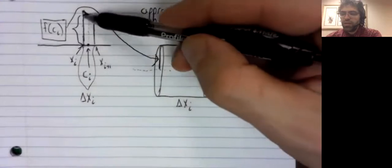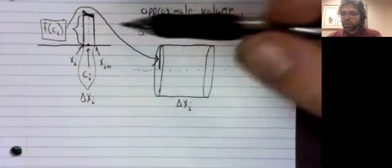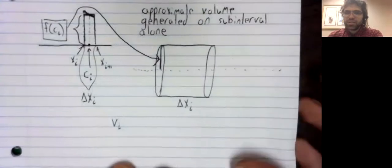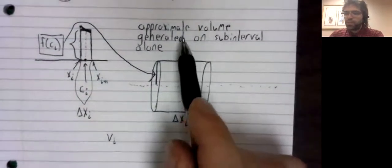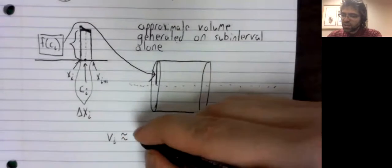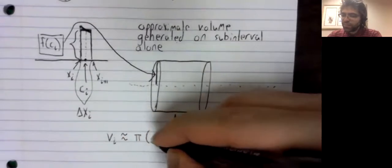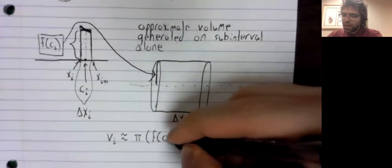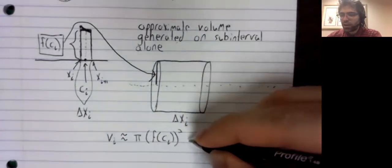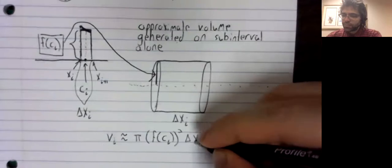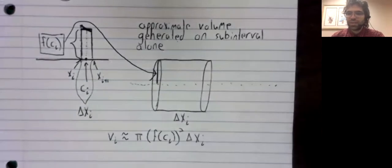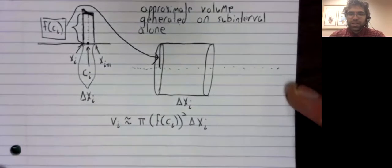So, our approximation of the volume using this rectangle is that the volume just looking at this sub-interval is approximately pi times the radius of this cylinder squared times the height of this cylinder.